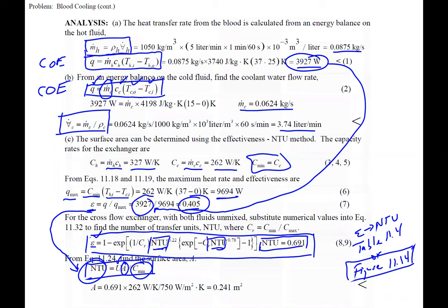With NTU = 0.691, we substitute into the NTU equation and solve for area, giving us the required surface area for the heat exchanger. Conceptually, as effectiveness approaches 100% — meaning Q_actual equals Q_max — the NTU and thus the required surface area approach infinity. So you can never truly reach 100% effectiveness; that's the physical meaning of the effectiveness parameter.